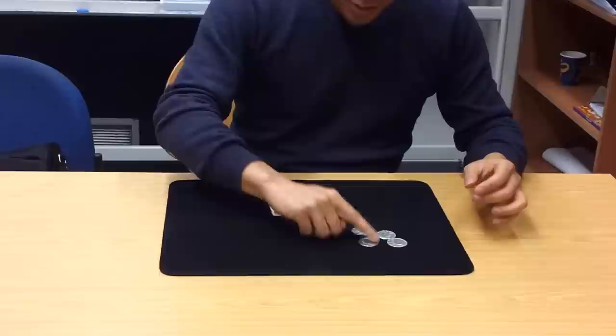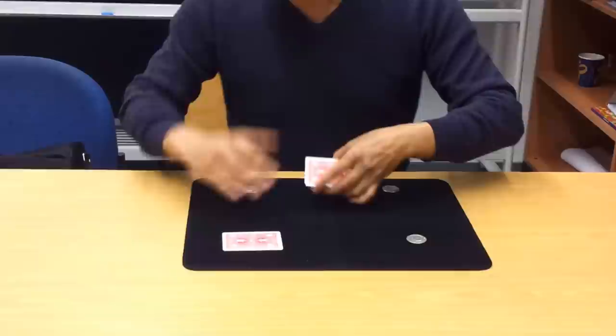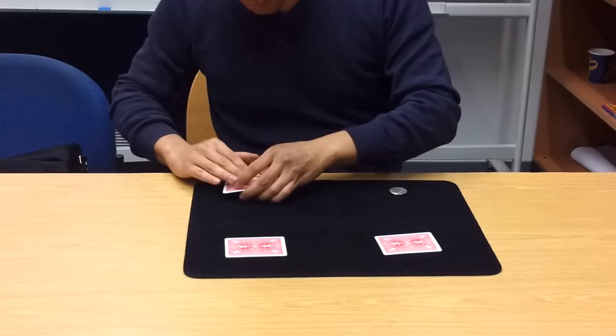Now I'll do it one time in extra slow motion so you can't see that I'm cheating. Watch. Starting positions. And this time I'll talk less so there's no psychological misdirection and you can't say that I'm doing any weird tricks to get your attention away from the coins. And there will be no quick or fast weird movements.